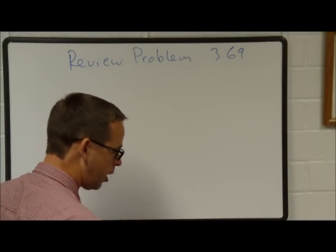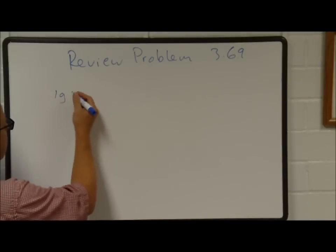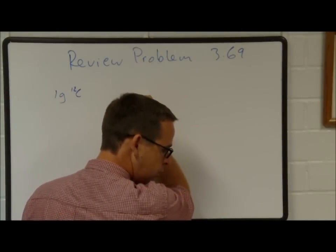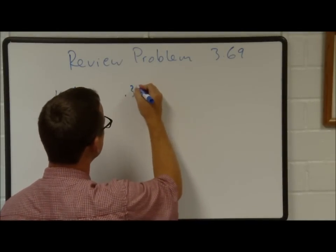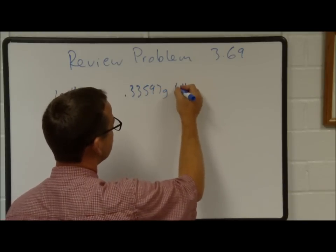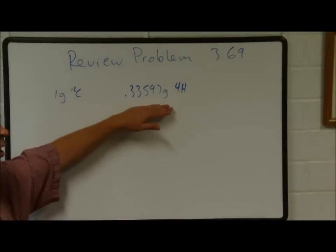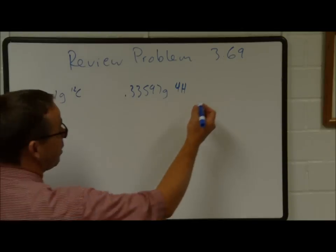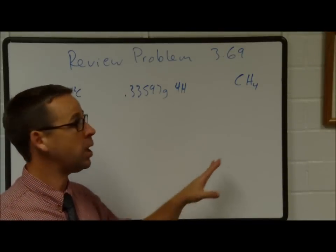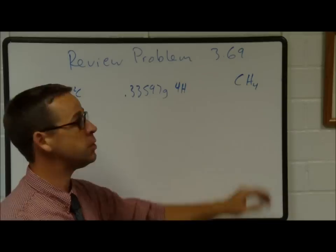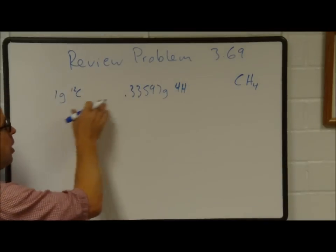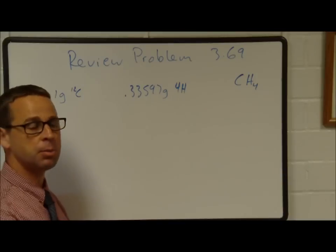For every one gram of carbon-12, there's 0.33597 grams of hydrogen. That grams of hydrogen is actually four hydrogen atoms. So we have a sample of methane. We know the chemical formula is CH4 because it says there's four hydrogens for every carbon. We have the chemical formula for methane, CH4, and we know that there's this many grams of hydrogen and that many grams of carbon in every sample.